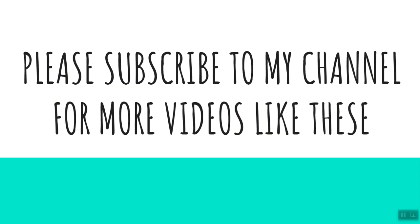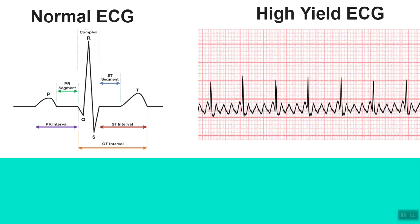This is our second important ECG. The first thing you will notice is that the baseline has a very characteristic waxing and waning waveform. The waveform resembles the teeth of a sawtooth, as you can clearly see here. This is a very commonly tested ECG in exams. Can you guess what the pathology is?